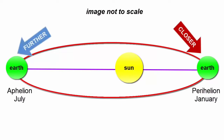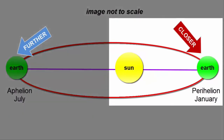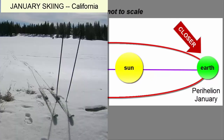Does that cause us to have seasons? We'd expect the planet to be a bit warmer overall when we're closer to the Sun. When does that happen? January. Is that our warmest season in the Northern Hemisphere? No. So the seasons must result from something entirely different.